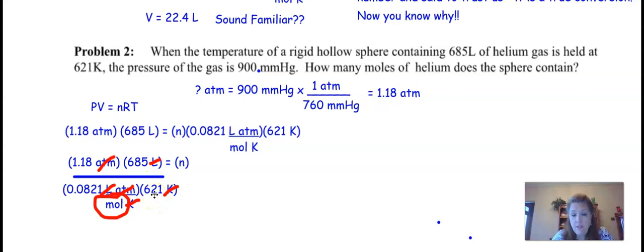So now get out your calculator. What's 1.18 times 685 divided by 0.0821 divided by 621. Now, if you wanted to and use parentheses, you could go 1.18 times 685 divided by parentheses, 0.0821 times 621 parentheses. Otherwise, I just hit divided by twice. And what do you get? Make sure you get what I get. I get n is equal to 15.9 moles.